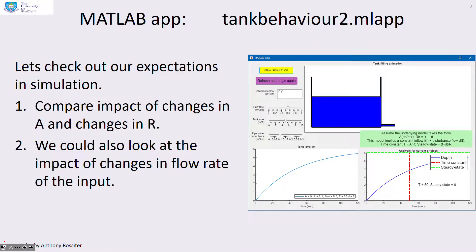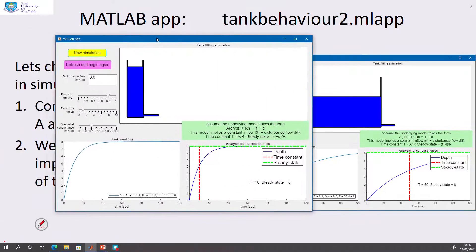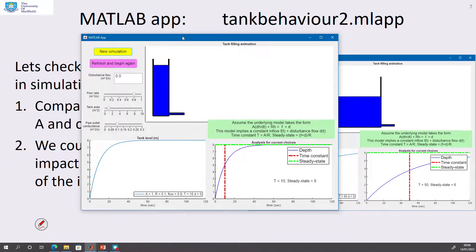Let's go to the MATLAB app to check our expectations in simulation, comparing the impact of changes in A and R and also changes in flow rate. The app already shows one simulation: area equals 1, R equals 0.1, flow equals 0.8. You can see the response, and the time constant is 10.